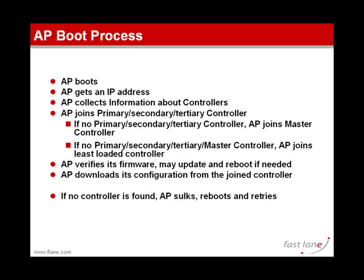Once the access point has joined the controller, it verifies whether the controller has a different firmware version. If the access point is running 5.2 and the controller runs 4.2, the access point downgrades. If the controller runs 6.0 and the access point runs 5.1, it upgrades. The access point joins first, downloads the new firmware, then reboots and restarts discovery from scratch — meaning it may join the same or a different controller. This is why it's safer to keep the same code on all controllers in your network.